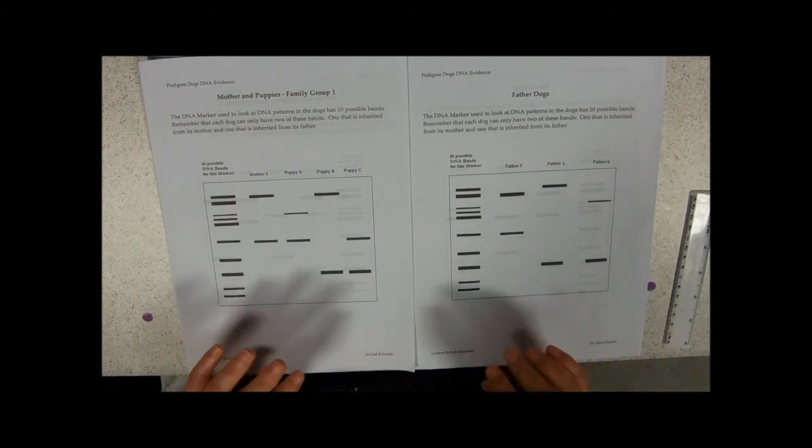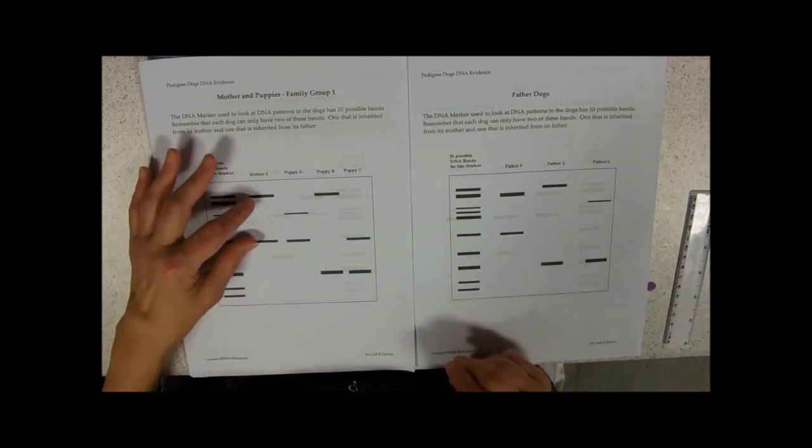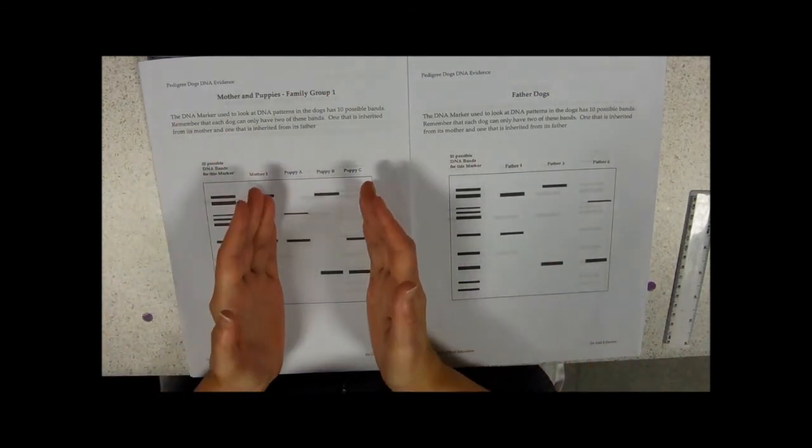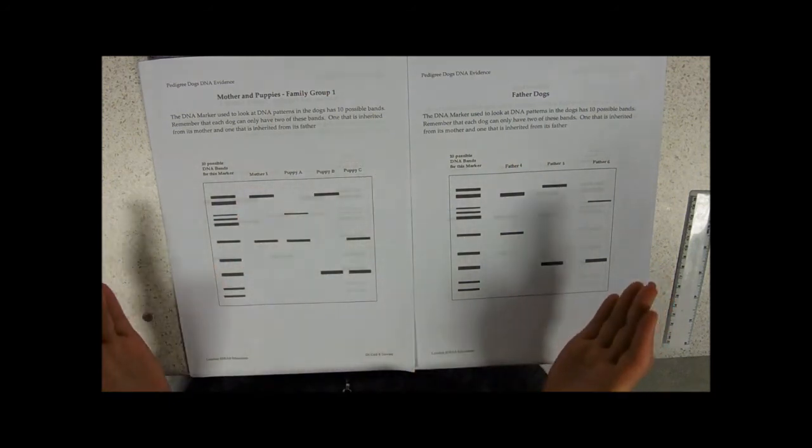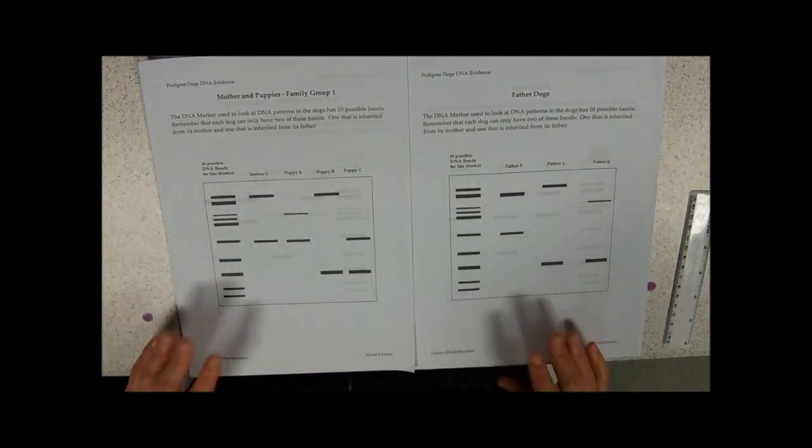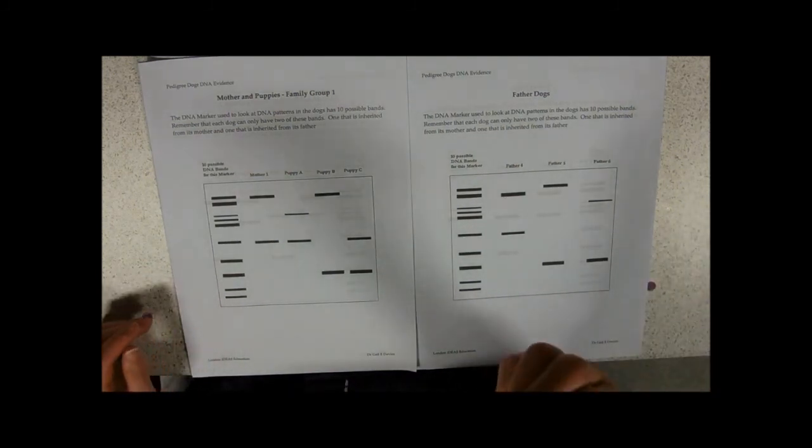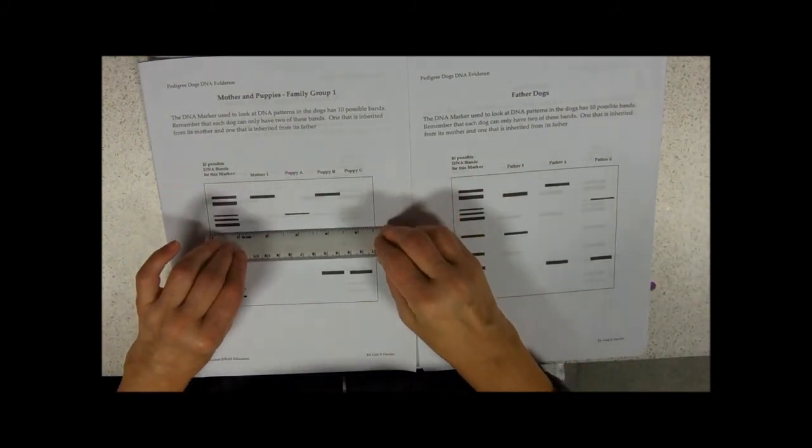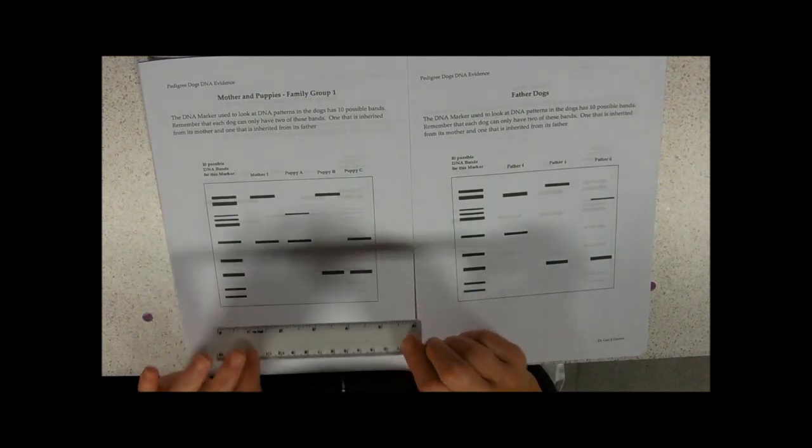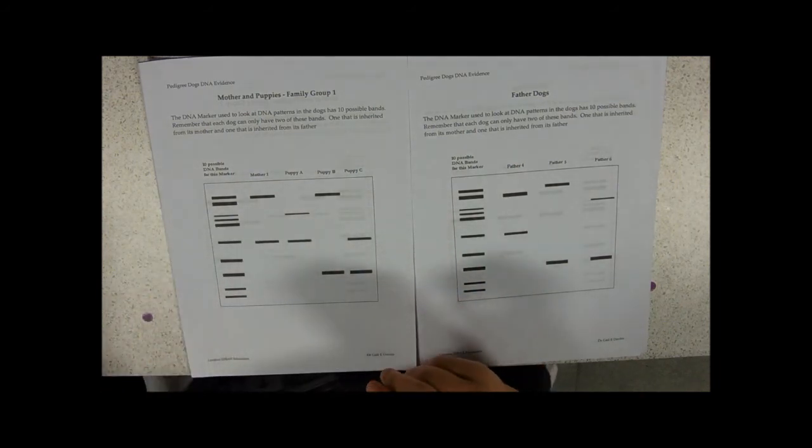Simple as that. So you're looking for what's the mother got, what the offspring got, everything else must be from the father. It's the only place that they can get it from. And ruler, absolutely invaluable, do avail yourself of one before the exam.